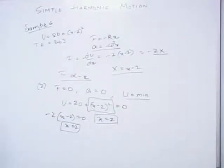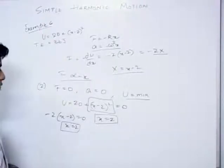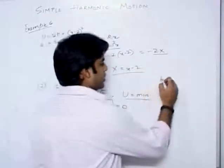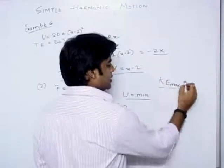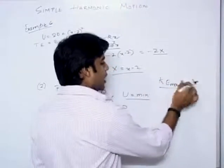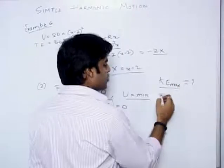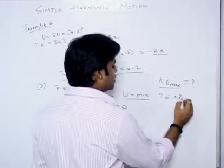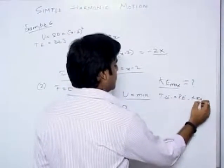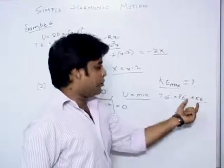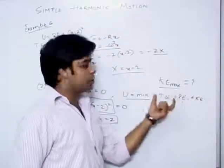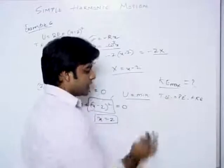Now let us come to the third part: find the maximum kinetic energy of the particle. Total energy equals potential energy plus kinetic energy. Kinetic energy is maximum when potential energy is minimum. The total energy is constant at 36 joules.